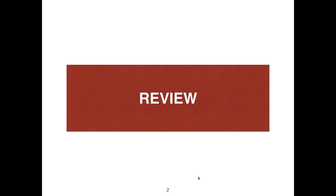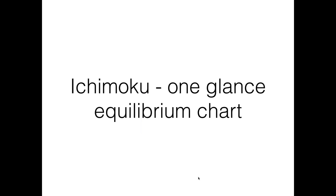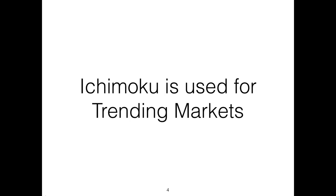Last week we talked about the basics of Ichimoku. Today we'll cover current chart examples which you might be able to use for your trading. Ichimoku is a one-glance equilibrium chart that tells you the medium-term and short-term bias of a position instantly. It shows the momentum, sentiment, and strength of the trend. Ichimoku is used for trending markets, but it is difficult to use in sideways markets because it may give conflicting signals.